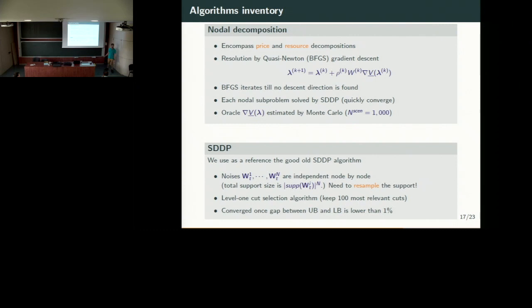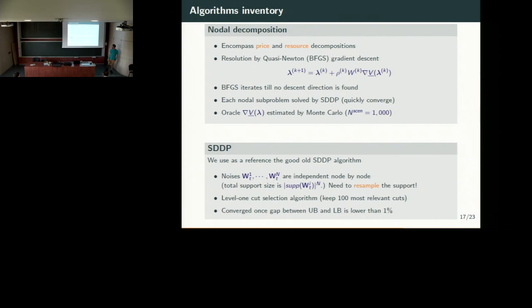We split the problem node by node, so at each node we solve the dynamic programming equation by SDDP. As the problem has low dimension, SDDP will be fast to converge. We estimate the different gradients by Monte Carlo. When we compare our two decomposition methods with a global SDDP method applied globally to the problem — considering the 48-node problem, simplified and solved by SDDP — SDDP is a reference method in stochastic programming using cutting planes to approximate value functions. We resample the noise support using a quantization algorithm, call SDDP, and stop when the gap between upper and lower bounds is below 1%.